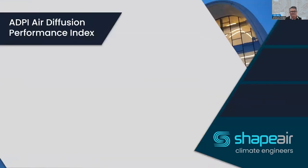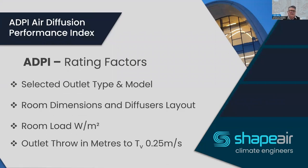The ADPI is a rating value. The factors used are: the type of outlet and model, the room dimensions and layout of the air diffusion equipment, the room load as it varies, and the throw of the outlet to a terminal velocity of 0.25 m/s.